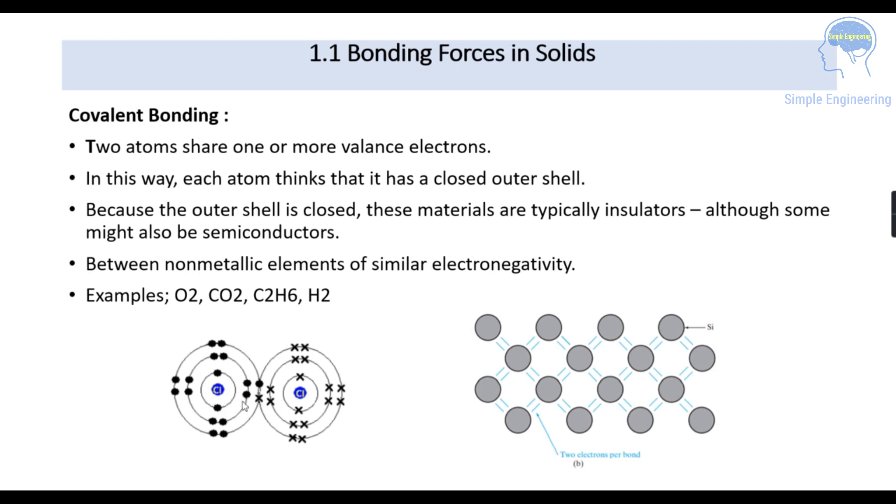For chlorine, two electrons per bonding is done. Silicon shares two electrons per bond with another silicon so that its outermost orbit is fully completed. Examples include oxygen, carbon dioxide, C2H6, and H2. All these come under covalent bonding.